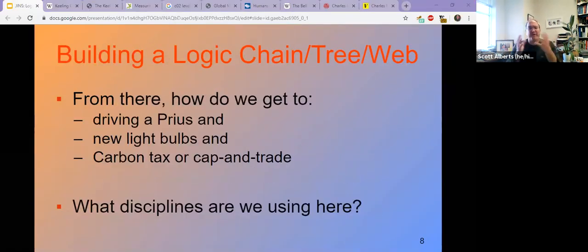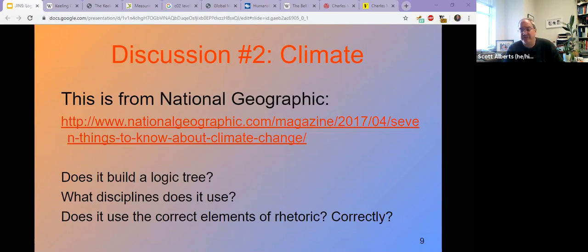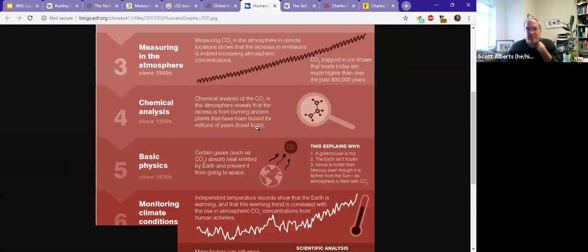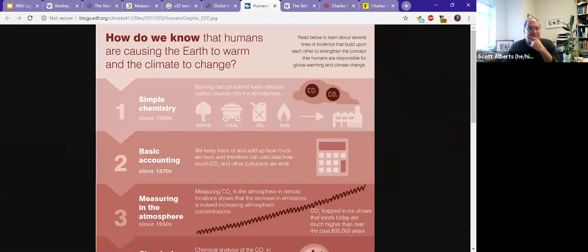So the question that we get to, though, is how do we go from there to you should drive a Prius, you should install new light bulbs that don't use quite as much electricity, or we should have something more at the macro level, a carbon tax or a cap and trade system as we do this. So I actually have an assignment for you where you're going to talk about that from National Geographic, where it builds a logic tree. And the question that I have for you in that response is, how does it do? Does it actually build a model doing the logic tree, the logic chain about climate change and how it works? Because there's a similar one that EDF has that builds a similar thing looking at different sources. And I have that source on the web page as well.